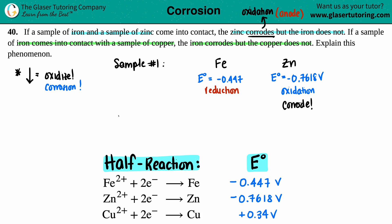So now let's just do sample two in the same exact manner. In this case, we have iron coming in contact with copper. So we have our Fe and now our Cu. We already know our cell potential for the iron, -0.447, and now the copper one is a positive 0.34 volts.